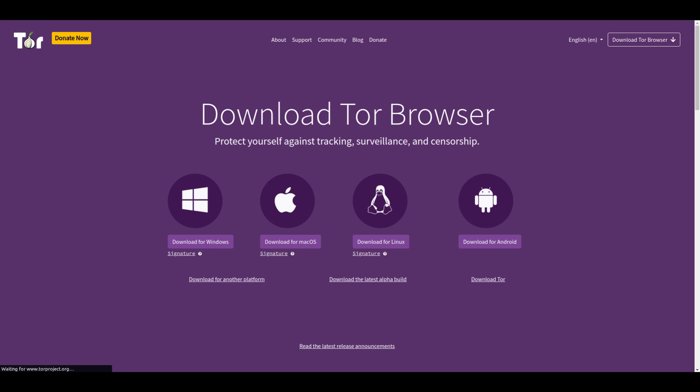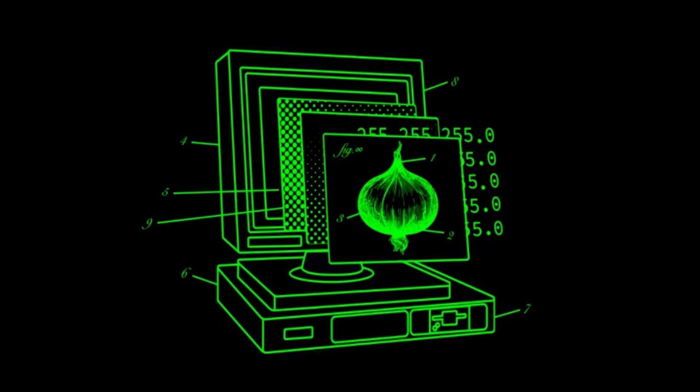It is important to use other security measures, such as strong passwords and antivirus software, to protect your privacy and security online. Overall, Tor is a valuable tool for protecting privacy and anonymity online. However, it is important to be aware of its limitations and to take other security measures to protect your privacy and security online.